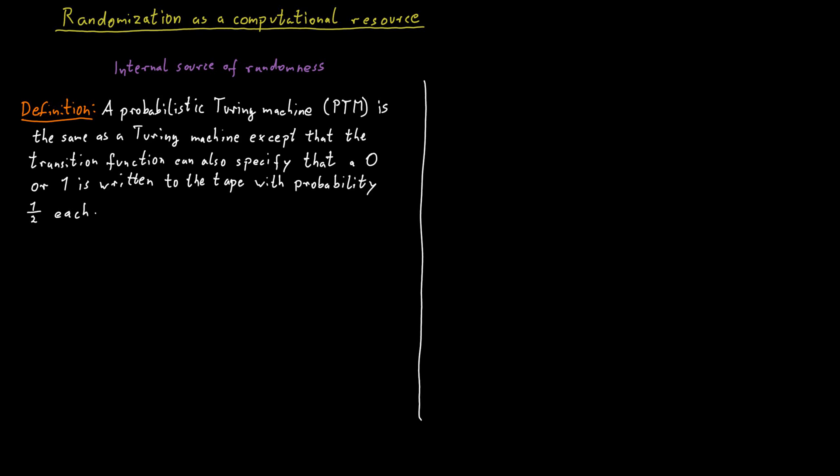The second way of thinking about randomization is that the model like the Turing machine remains unchanged. So we are still dealing with a completely deterministic Turing machine. Instead, the randomization is provided from outside and fed into the Turing machine. In this case, the Turing machine simply gets the normal input it would get anyway, but then it will get also a string of random bits in addition to this. And it can use the string of random bits in its computation in any way it likes.